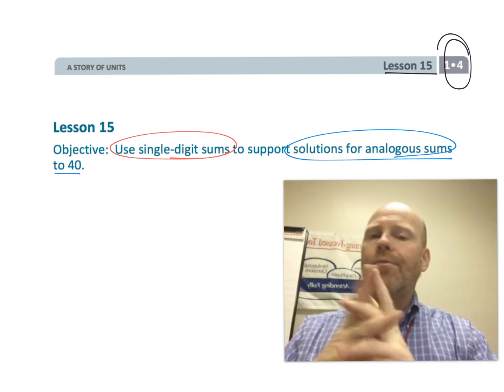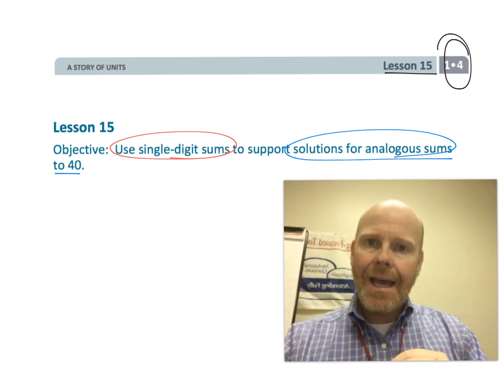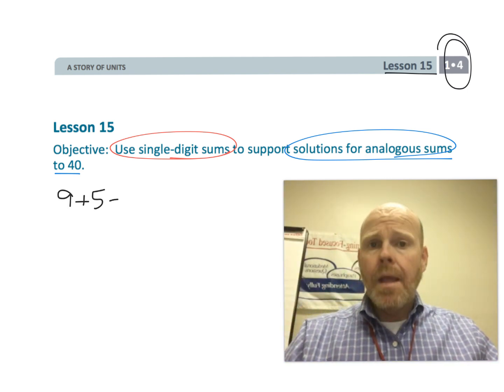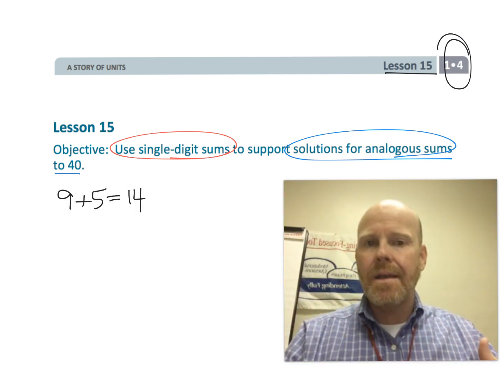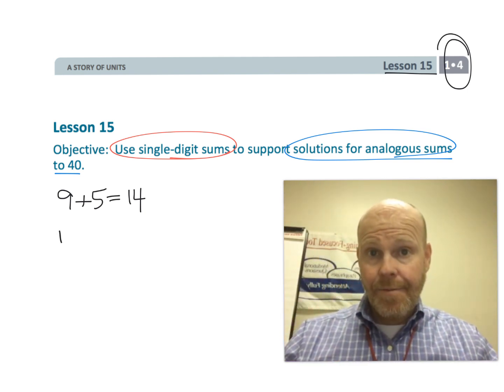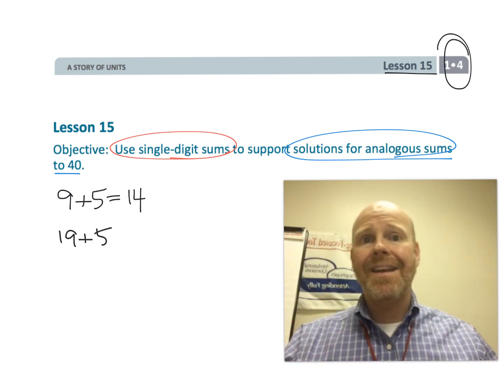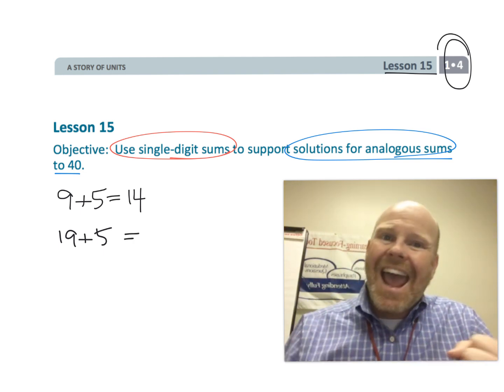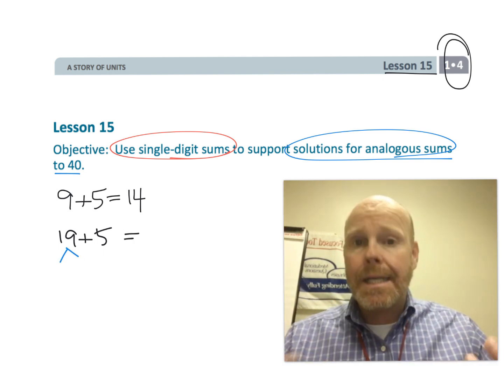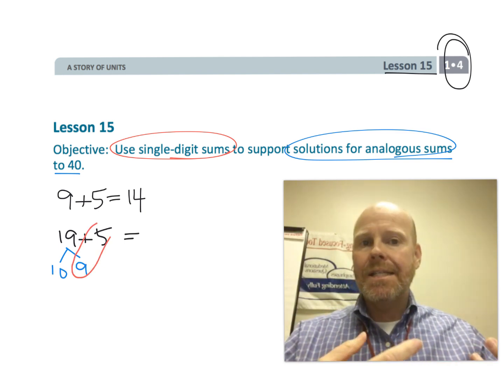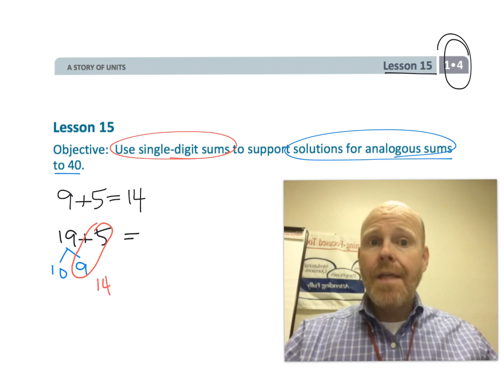So the idea is if students understand that 9 plus 5 equals 14, they can use that understanding to solve 19 plus 5, because really if you think about it, 9 plus 5 is already 14, and then we just add that extra 10 from the 19.